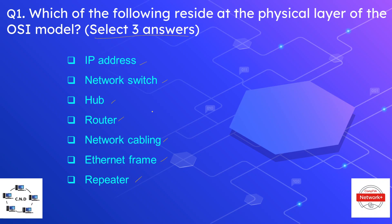The correct options are hub, network cabling, and repeater. The hub is a physical layer device — physical layer is also known as layer one. Network cabling is also done at layer one, and repeater is also a layer one or physical layer device.